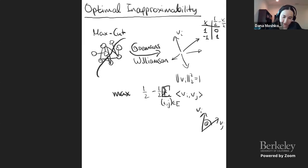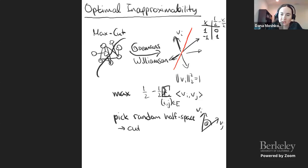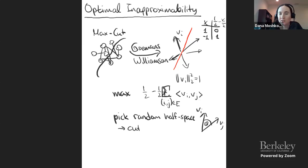What they do is pick a random half-space. This random half-space induces a cut: everything on one side of the random half-space goes to one side of the cut, and everything on the other side goes to the other side. Things that are very anti-correlated are not going to be on the same side of the cut, but things that are very correlated are likely to find themselves on the same side.